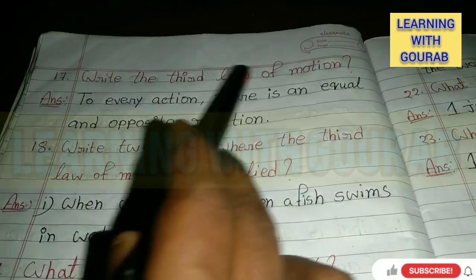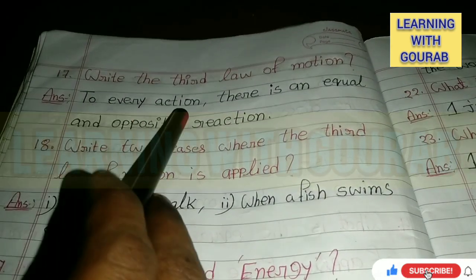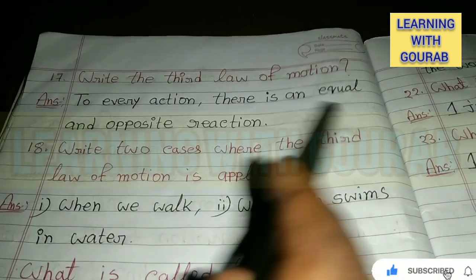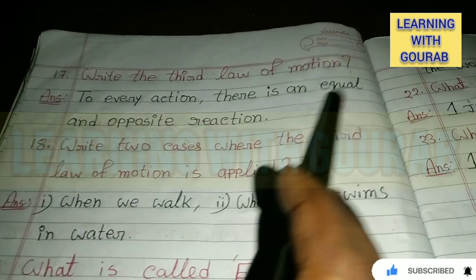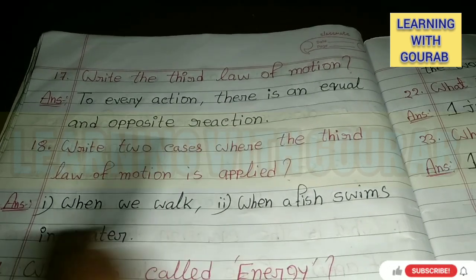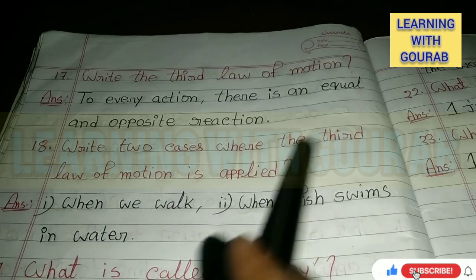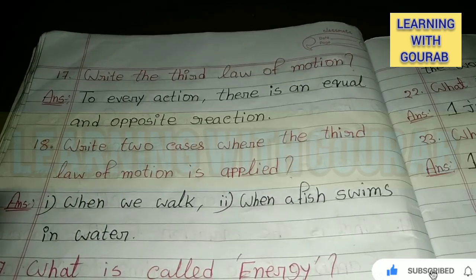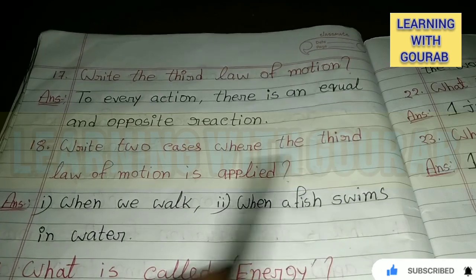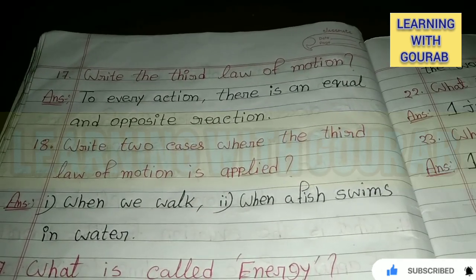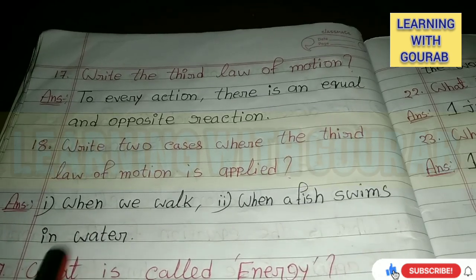Third law of motion: To every action there is an equal and opposite reaction — in both ways the action is equal and opposite. The third law of motion is applied in both ways. For example: when we walk, and when a fish swims in water.